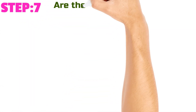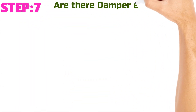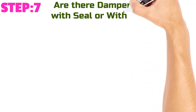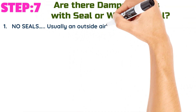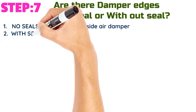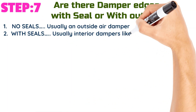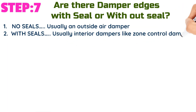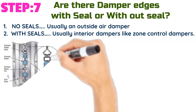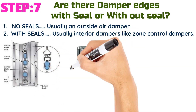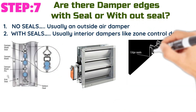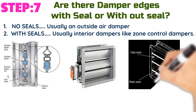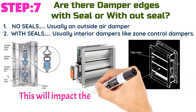Step number seven: Are the damper edges with seal or without seal? One — no seals dampers, usually an outside air damper. Two — with seals dampers, usually interior dampers like zone control dampers. This will impact the proper selection, as the seals add resistance, requiring more torque.